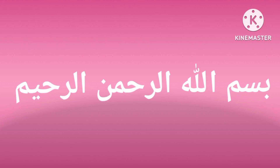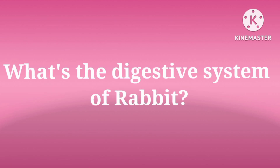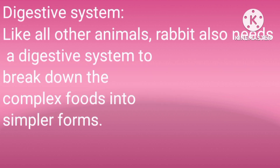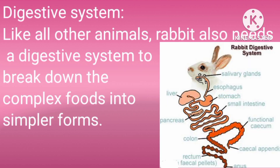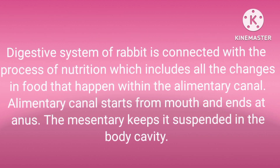Bismillah ar-Rahman ar-Rahim. Assalamu alaikum. Today we are going to discuss: what is the digestive system of rabbit? Like all other animals, the rabbit also needs a digestive system to break down complex food particles into simple form. The digestive system of rabbit is connected with the process of nutrition, which includes all changes in food that happen within the alimentary canal.